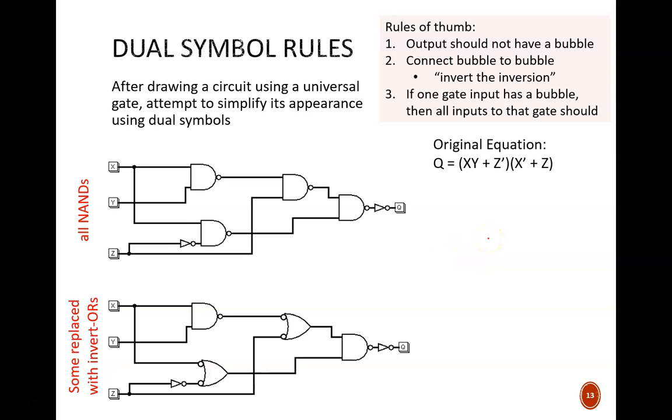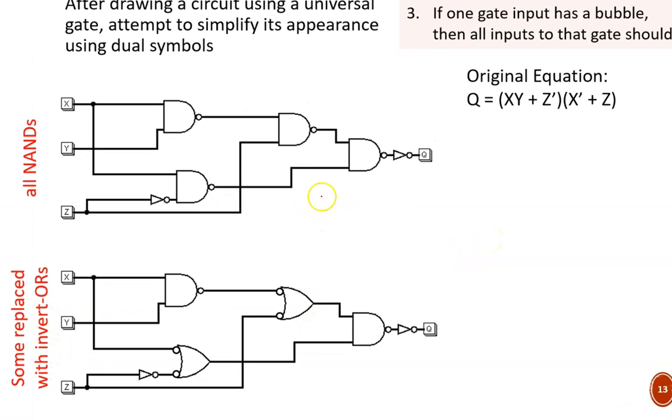Let's compare these two circuits. The top one was developed from this equation following the same steps shown last video. The bottom one applies dual symbols to make it easier to read. I started at the output. There we see a double bubble. This is fine, so I left the final AND invert gate as is.